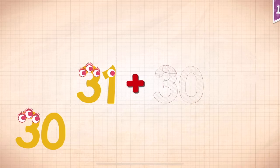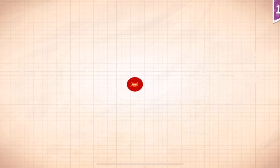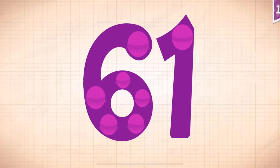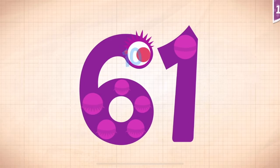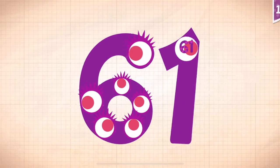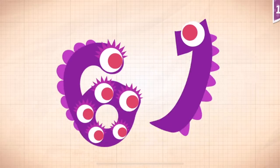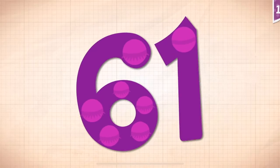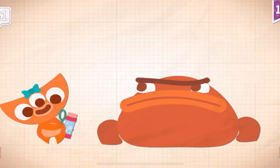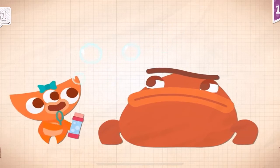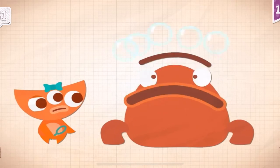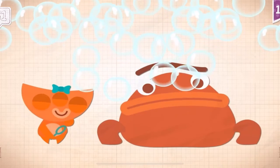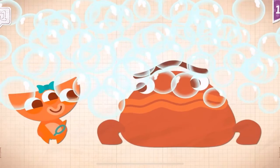31 plus 30 equals 61. Touch the monster's eyes to wake it up. 10, 20, 30, 40, 50, 60, 61. Yay! Grumpkin hiccuped out 61 bubbles.